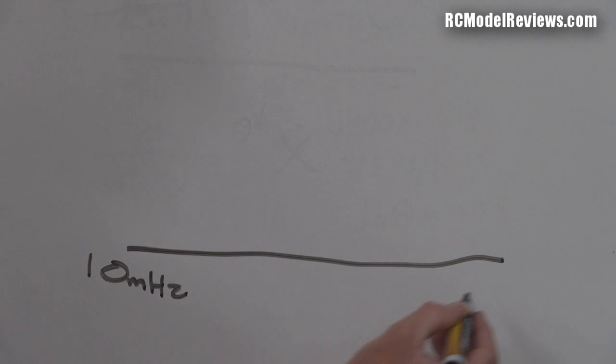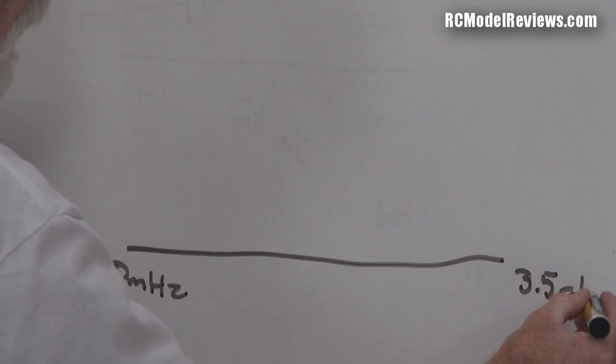Let's have a look at what a spectrum analyzer does. Let's draw the spectrum of radio frequencies along here. Let's say this is 10 megahertz—that's a low frequency—and up here we might have 3.5 gigahertz.